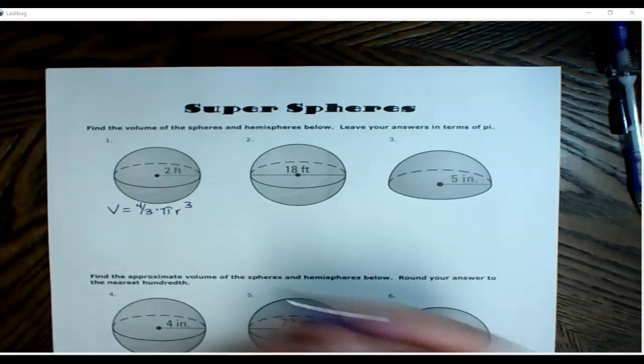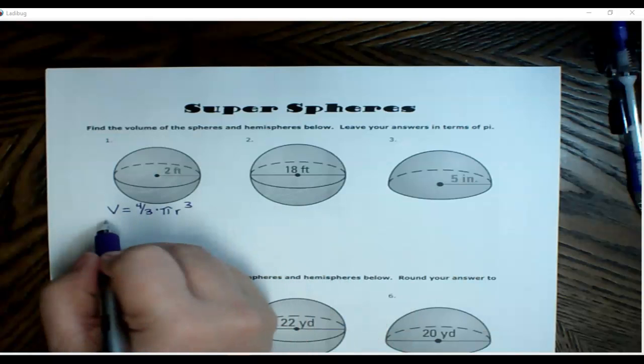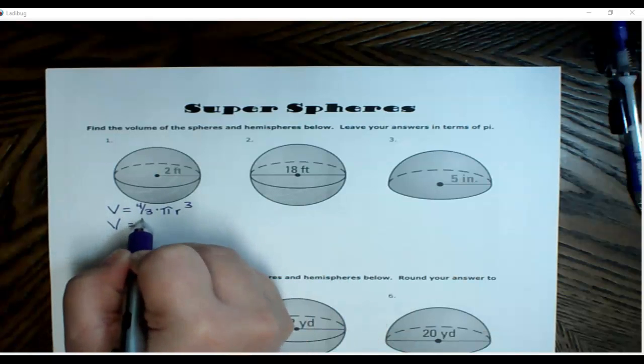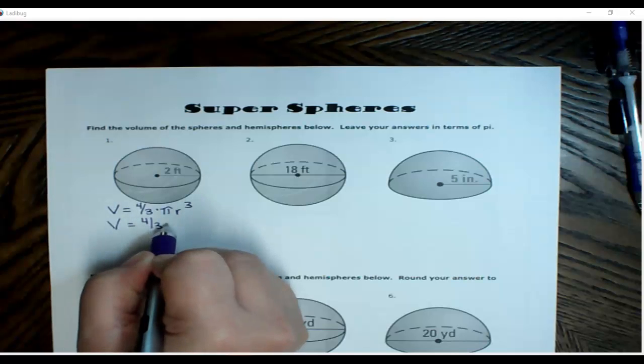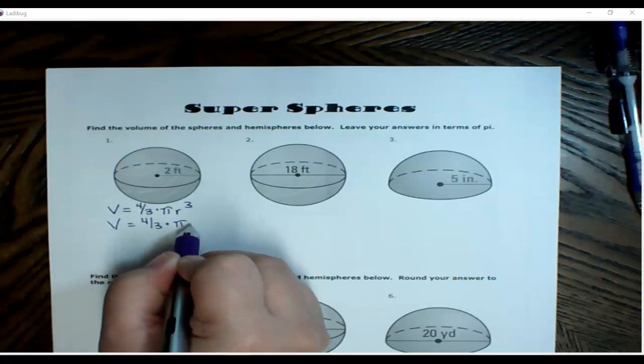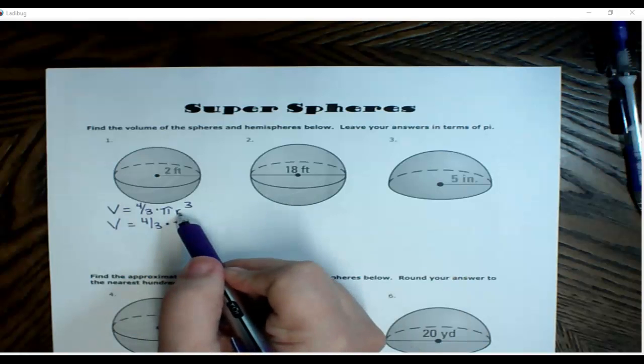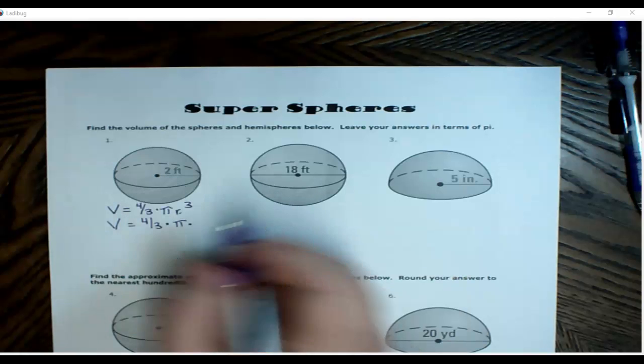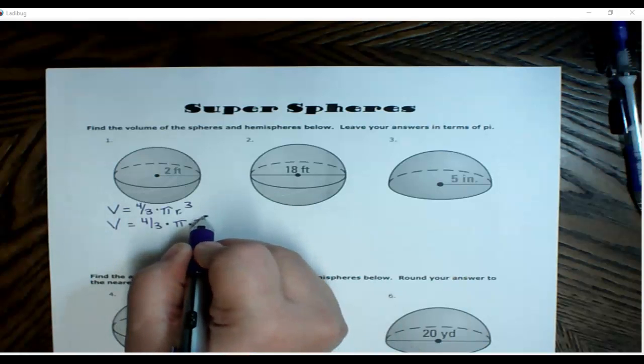All right, now let's go ahead and just start substituting in what we know. Volume equals four-thirds times pi times, what is my radius? My radius is two, so two cubed.